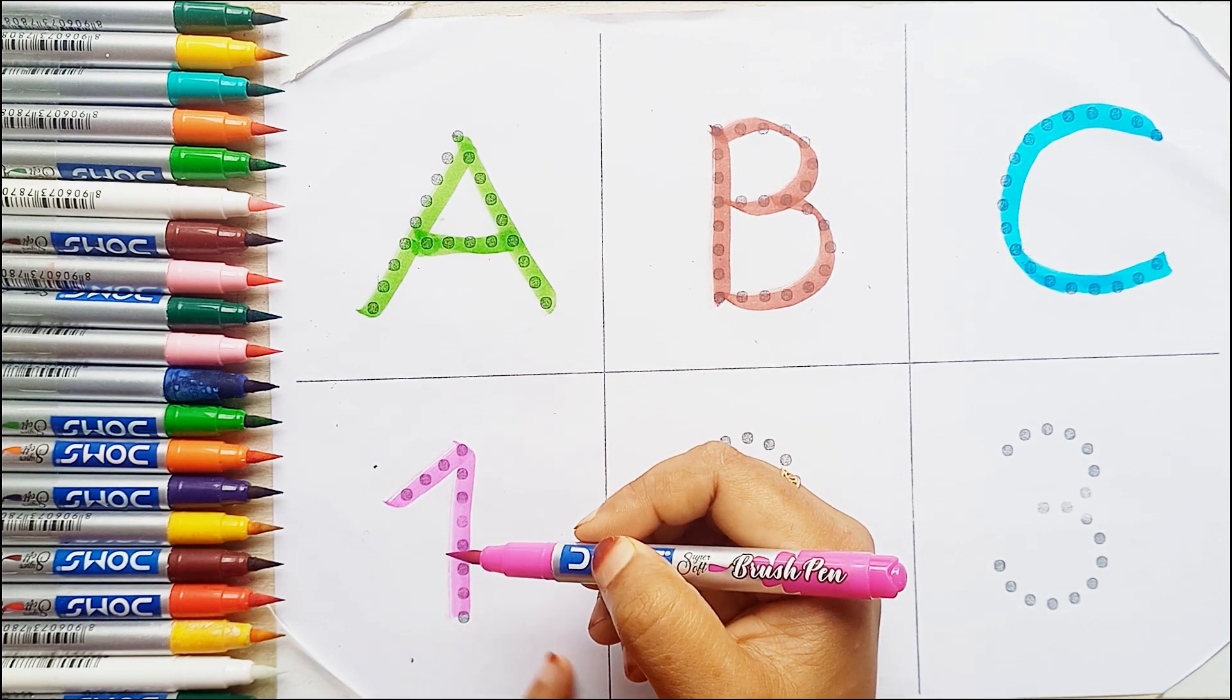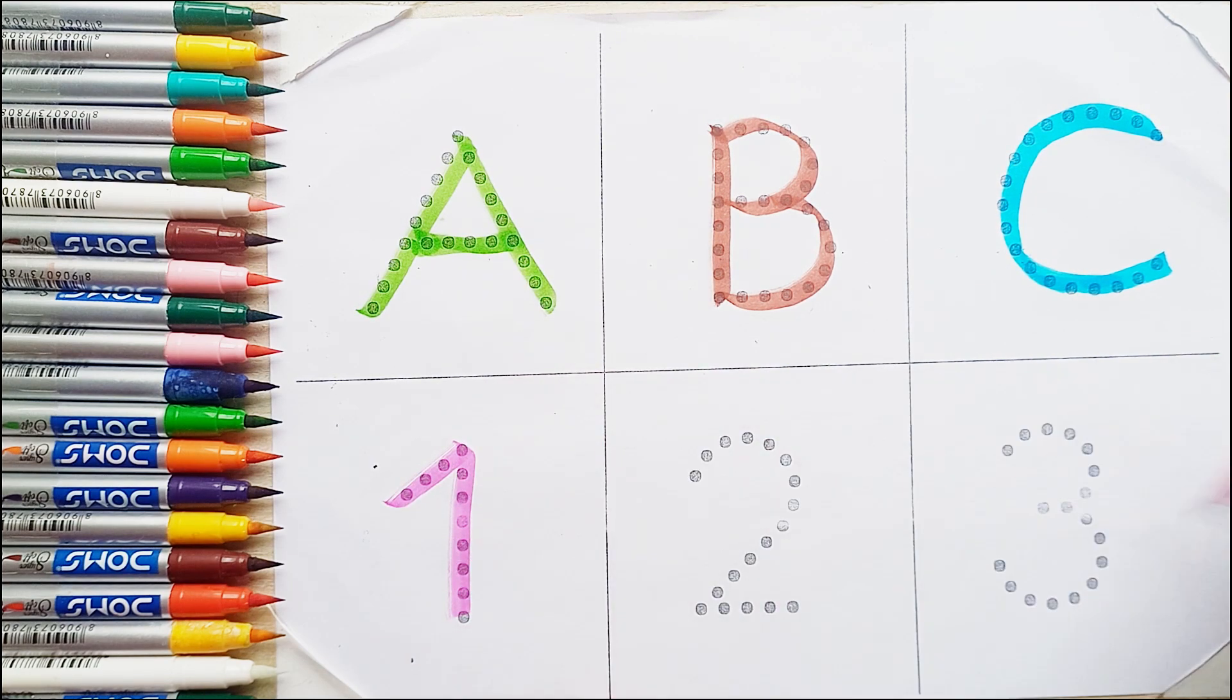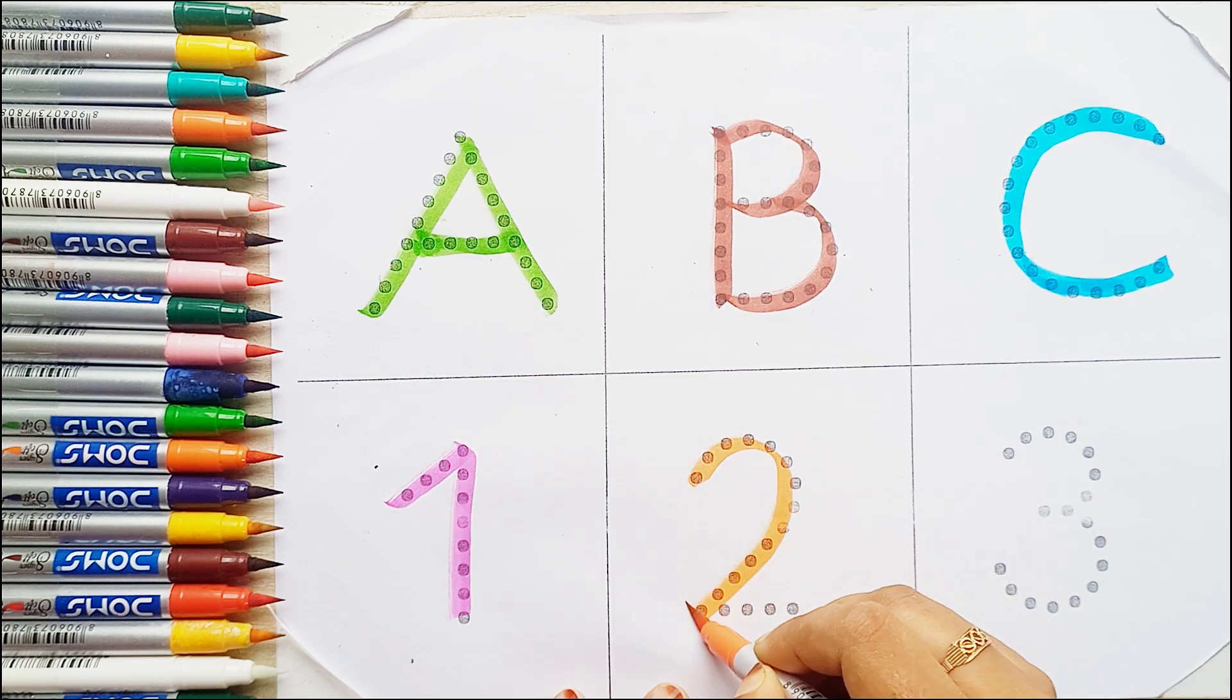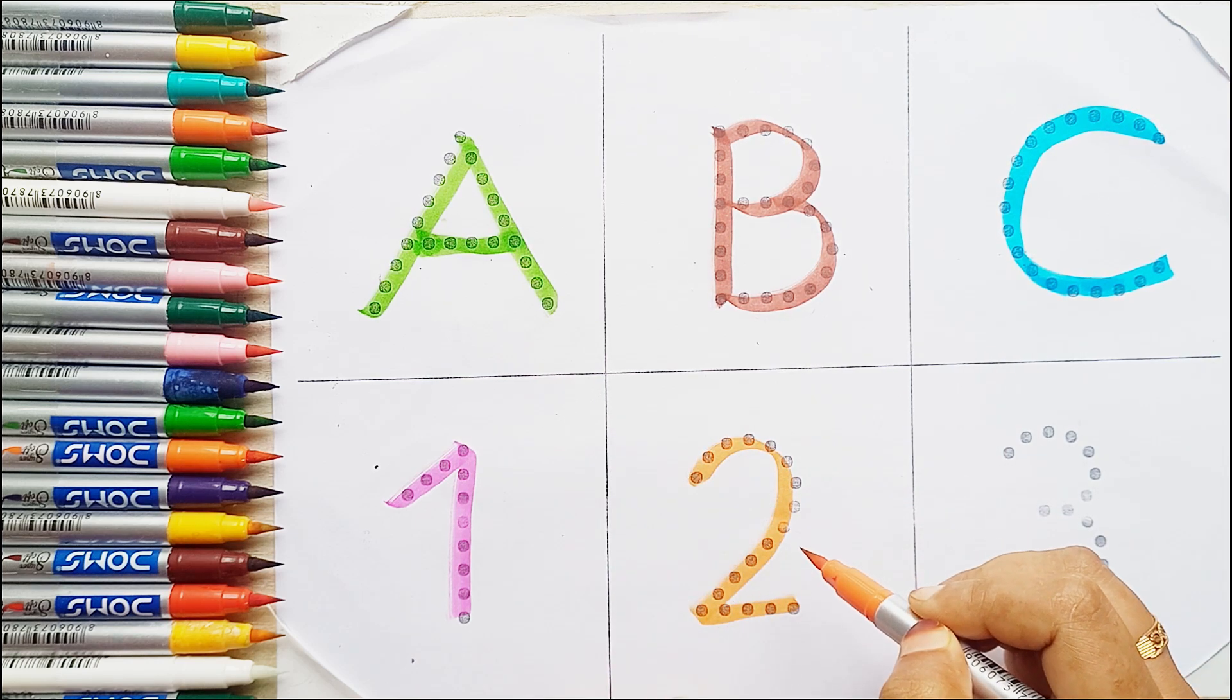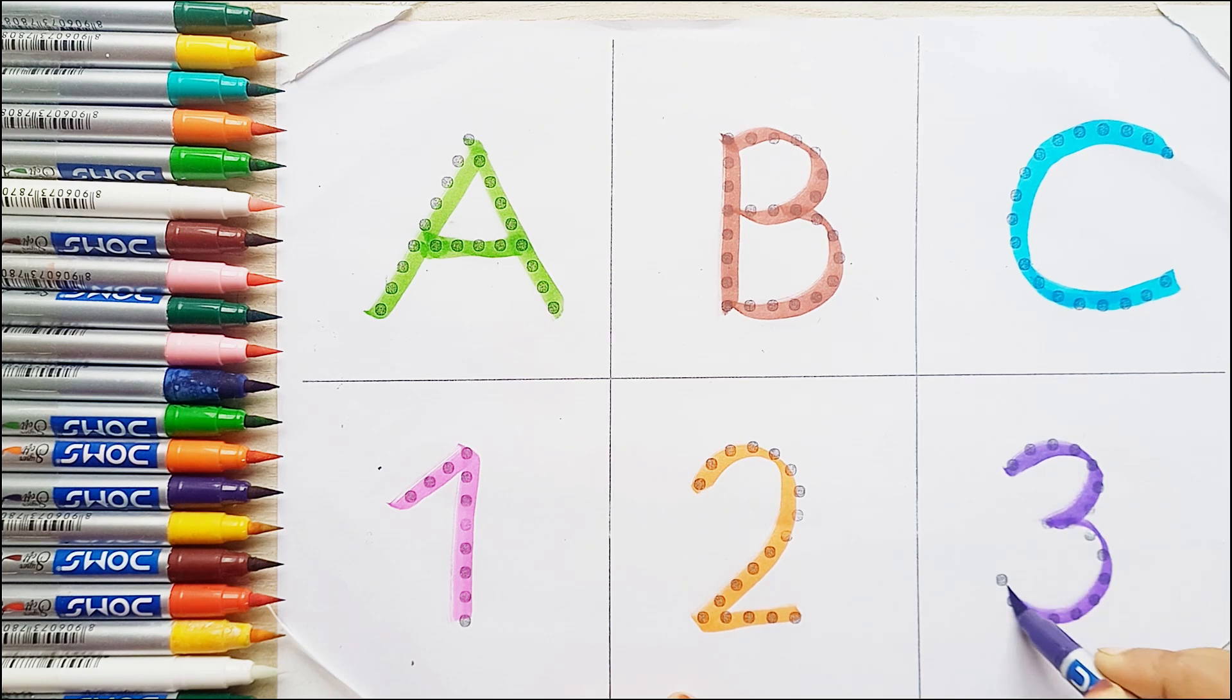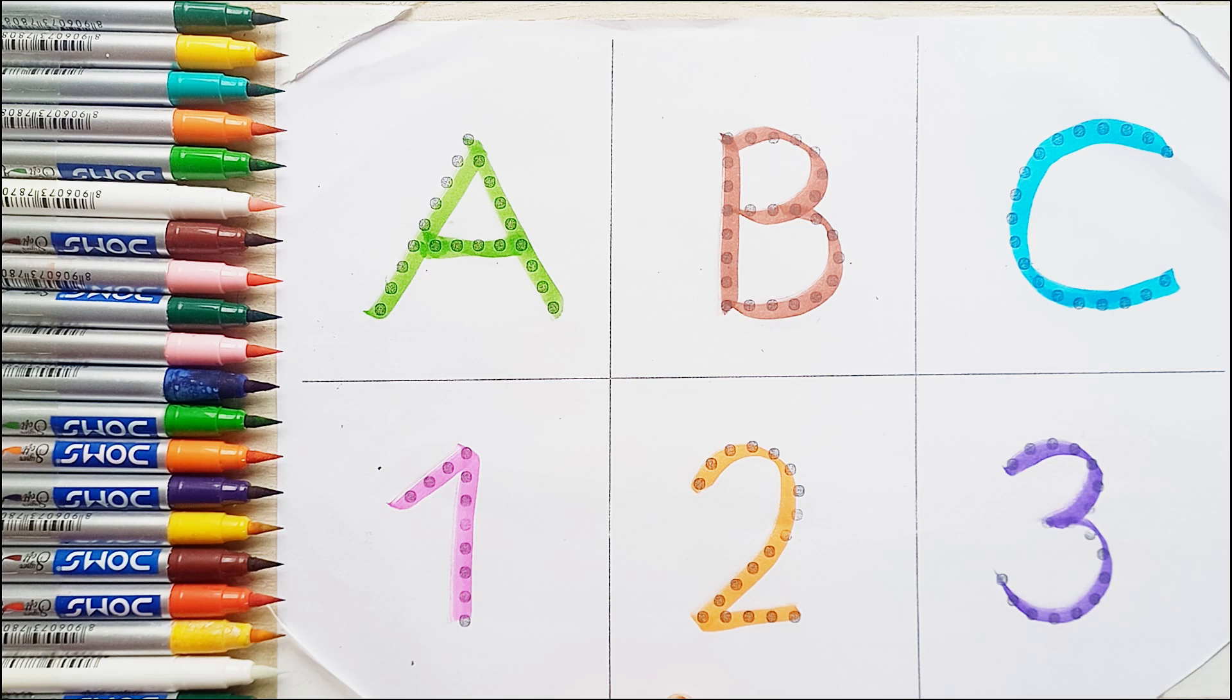One, O-N-E, one, orange color. Two, T-W-O, two, violet color. Three, T-H-R-E, three. Let's do it again: A, B, C, one, two, and three.